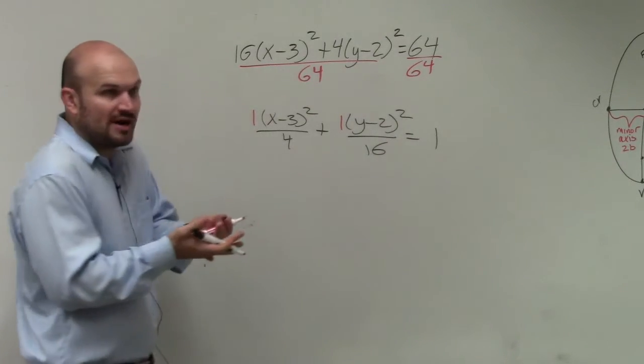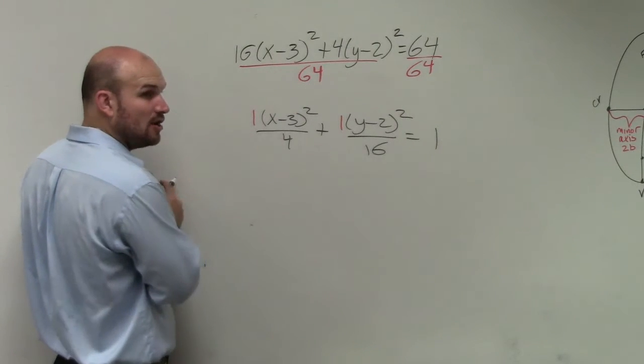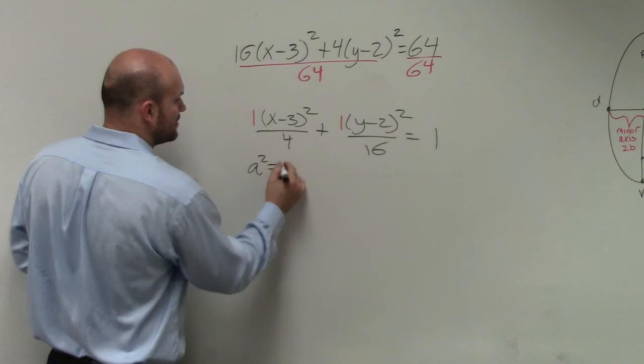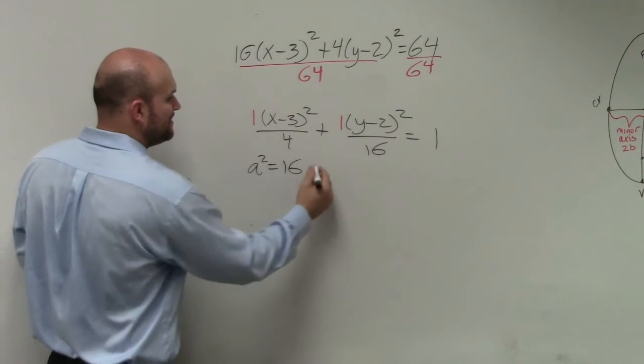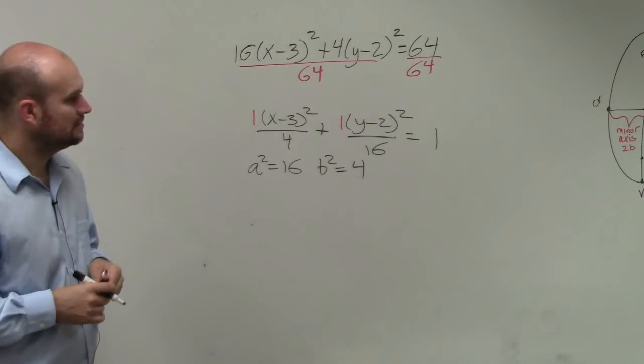Therefore, a squared is always larger than b squared. So I look at this and notice my a squared has to be 16, and b squared has to equal 4.